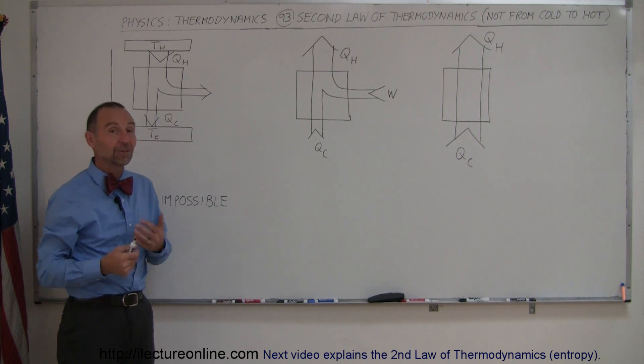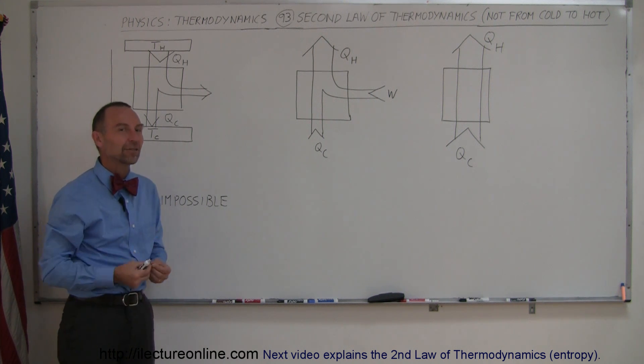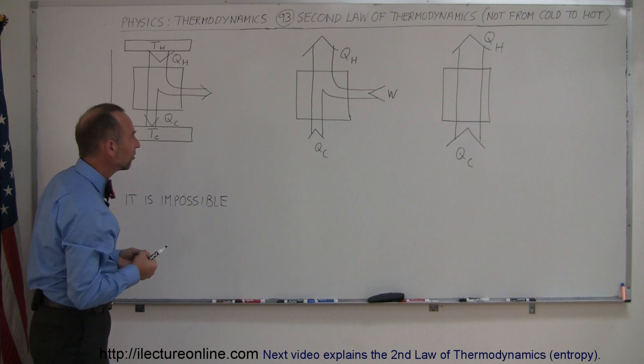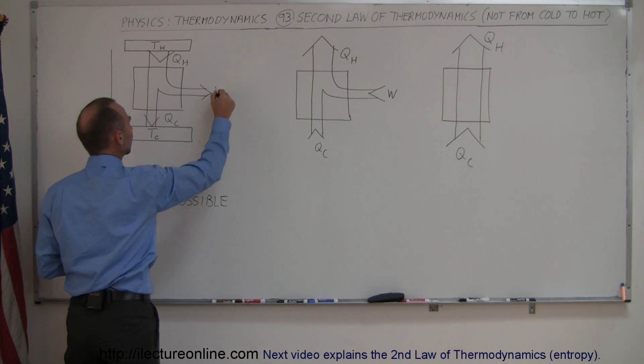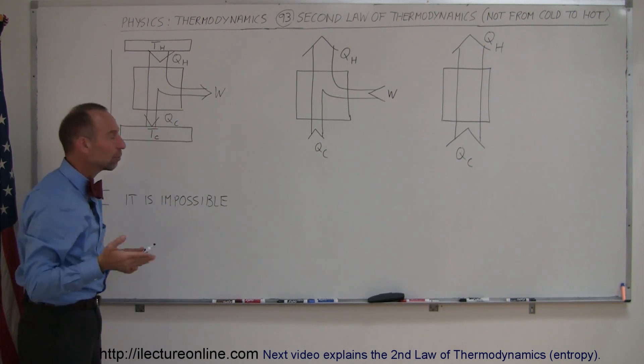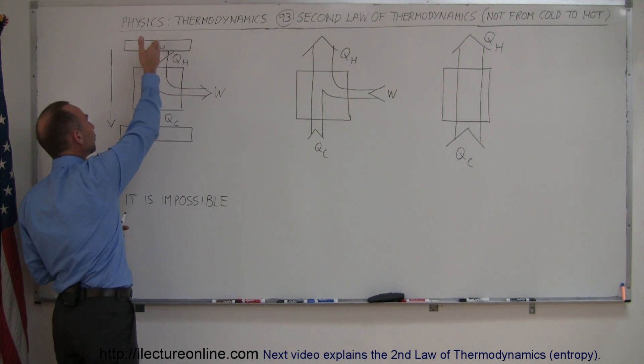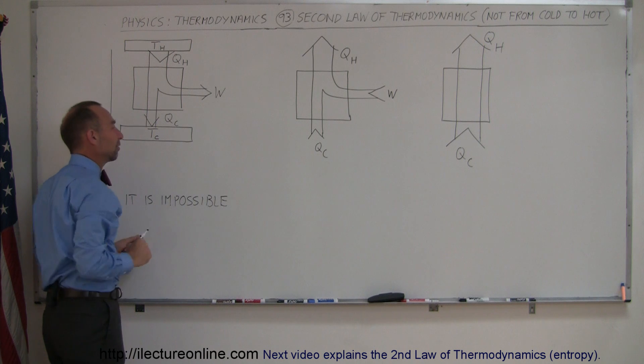There's a reason for that. The second law of thermodynamics prohibits that from happening. So what we can see is that if we have a heat engine, the only reason why it can work, why we can actually get work out of a heat engine, is because the natural process allows heat to flow from a hot reservoir to a cold reservoir.